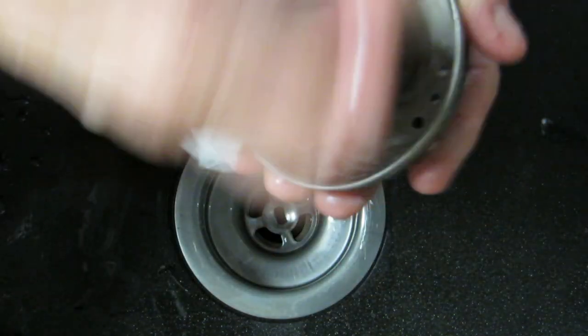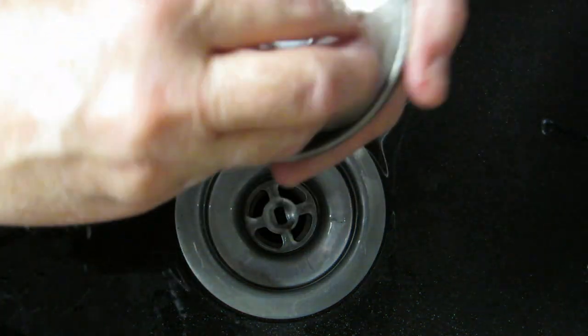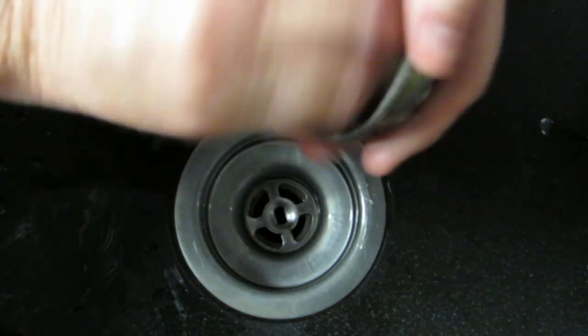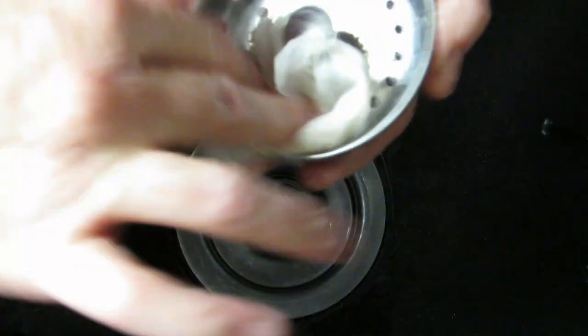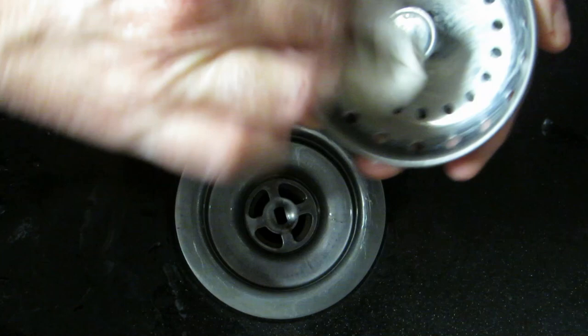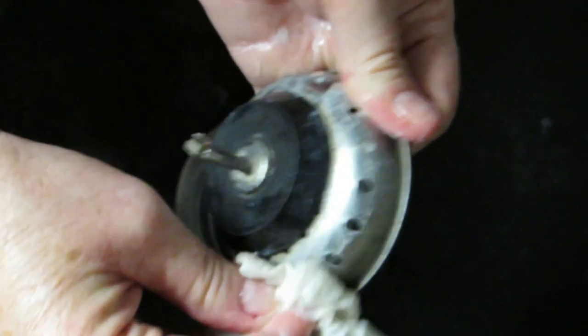Sometimes when I do whites that have stains on them, I'll pre-treat the stains, but I also throw one or two Bounce sheets in the washing machine because I've noticed that helps too.